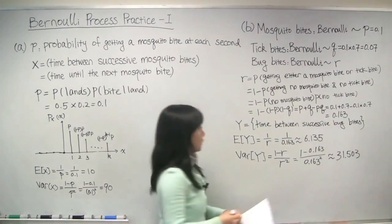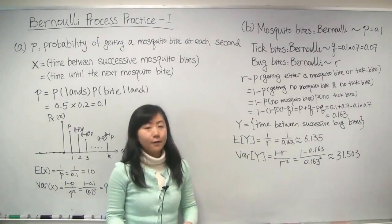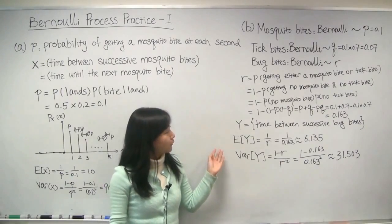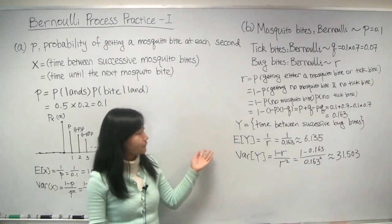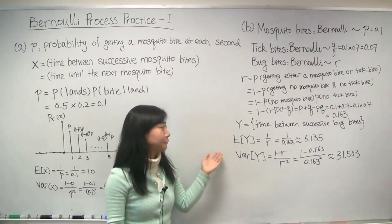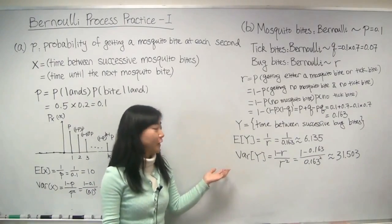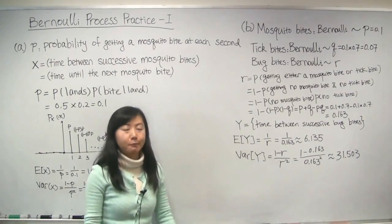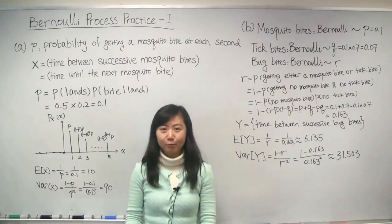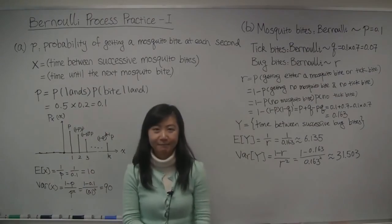So this gives us the expected value of the time between successive bug bites and the variance of the time between successive bug bites. This concludes our today's practice on Bernoulli process. Have a nice day.